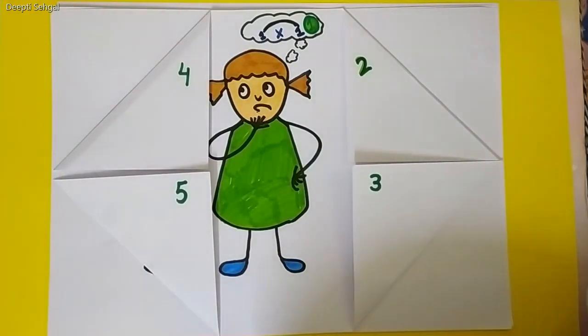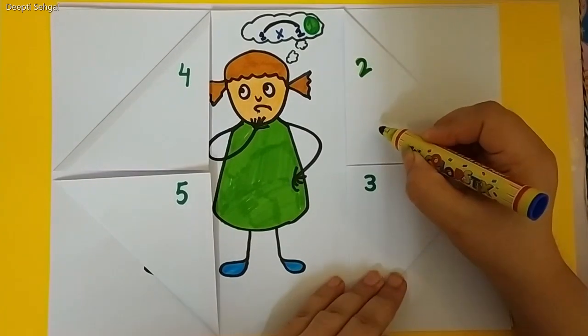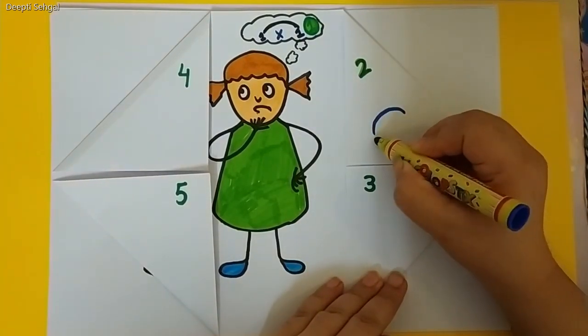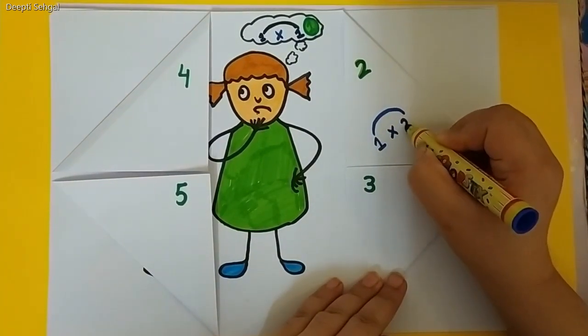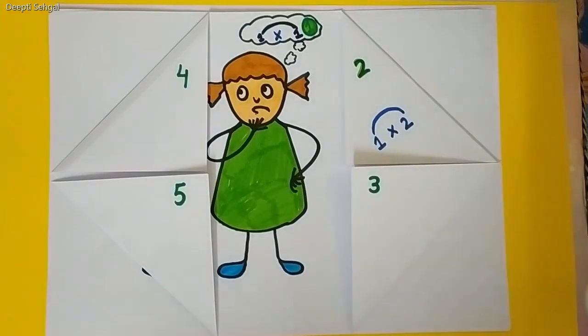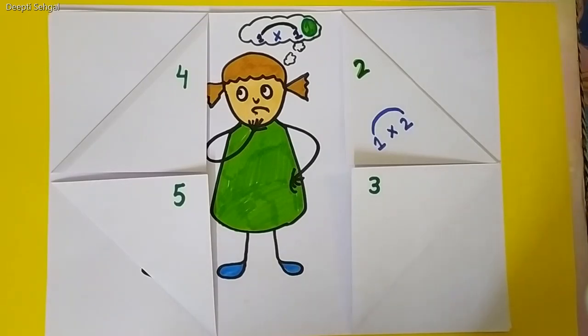Then she thought about the number 2 and she made the rainbow of 2 by writing 1 multiply by 2. Again, there was only one color. Chiku got so upset that this is not a colorful number.